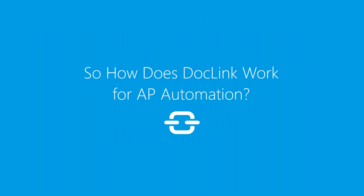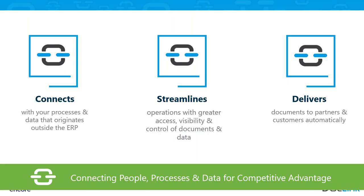The resounding question on everyone's mind: how does DocLink work for AP automation? DocLink has the ability to connect the right people at the right time with the right documents to effectively do their critical work. It streamlines operations and gives back control of documents, data, and transactions. It delivers documents to partners and customers outside the business, or allows those same people to access that information — as security permissions permit — via a self-service portal we call Web Client. DocLink fulfills your complete document management cycle and paperless initiatives, paving the way to enable achievement of your strategic initiatives.